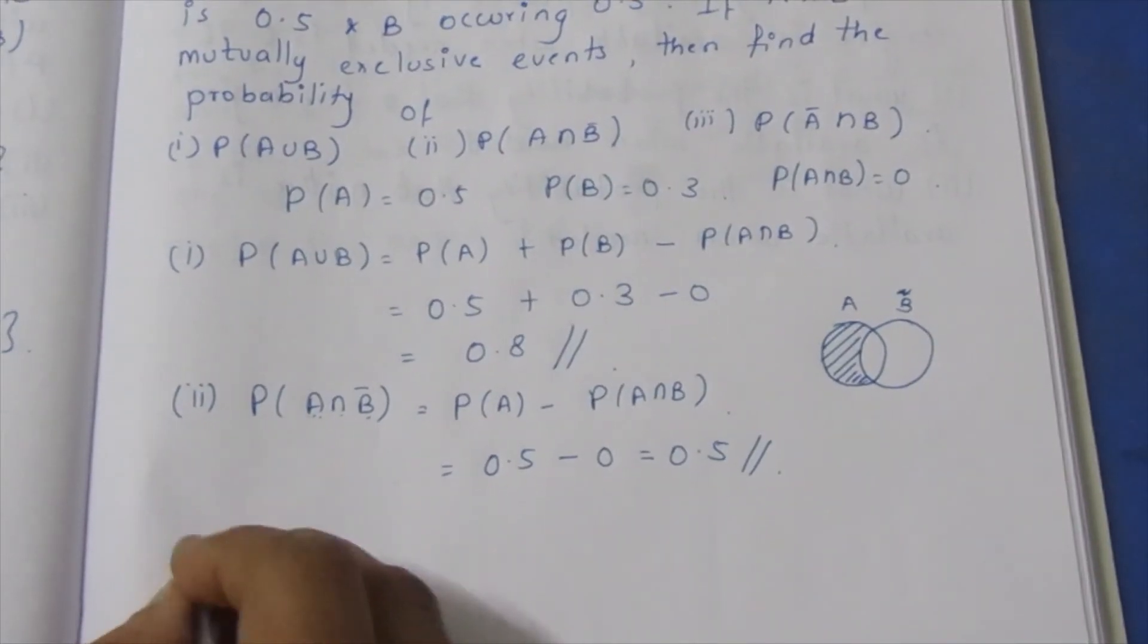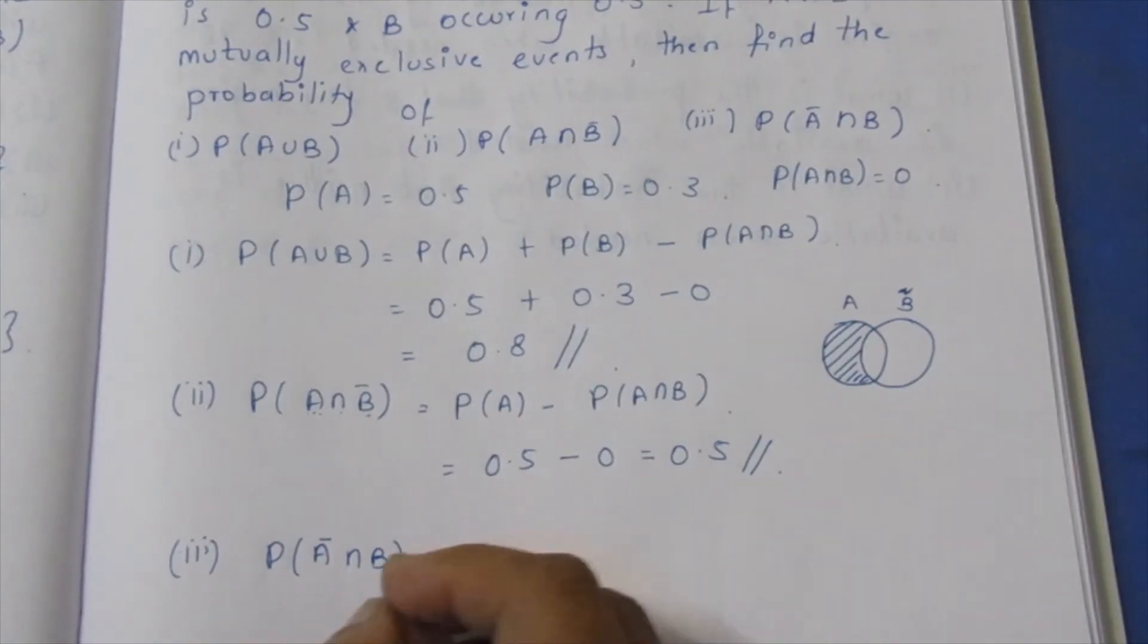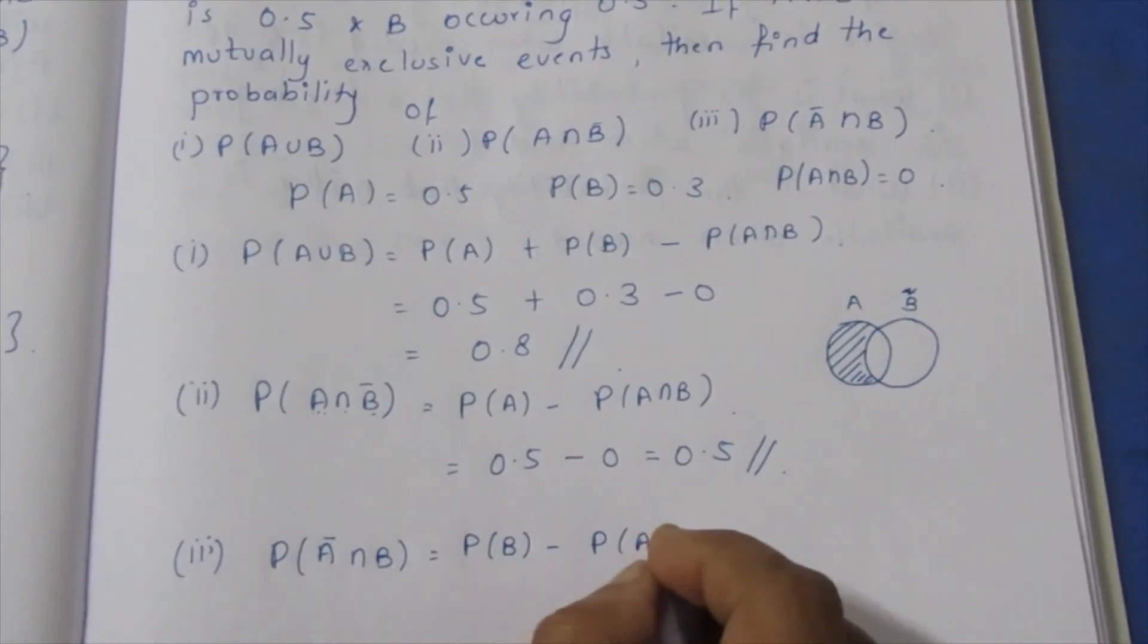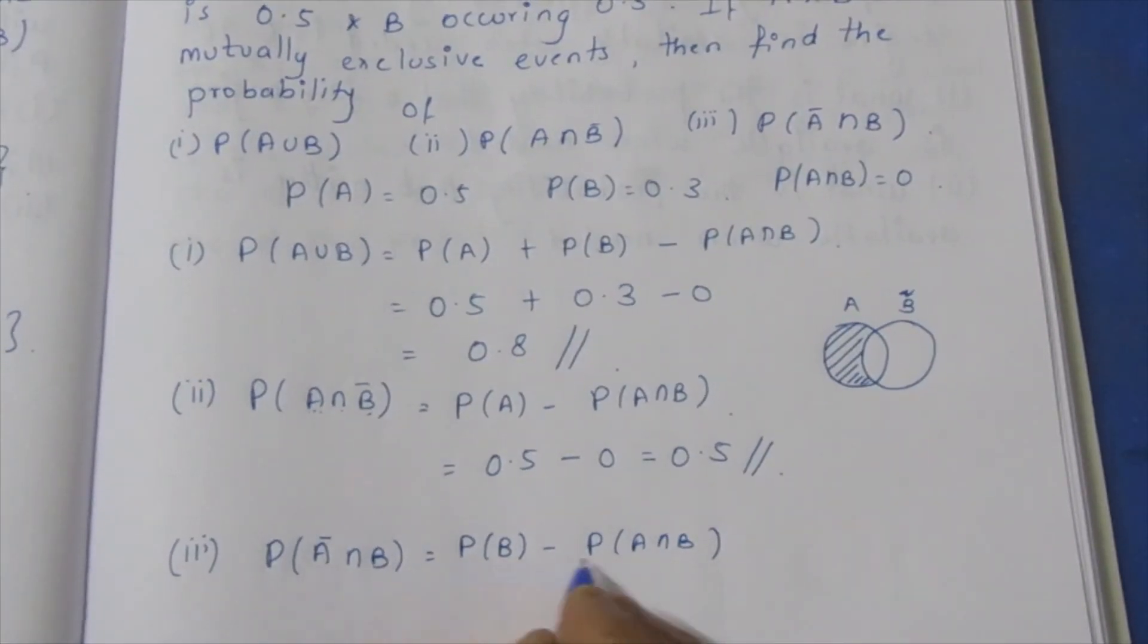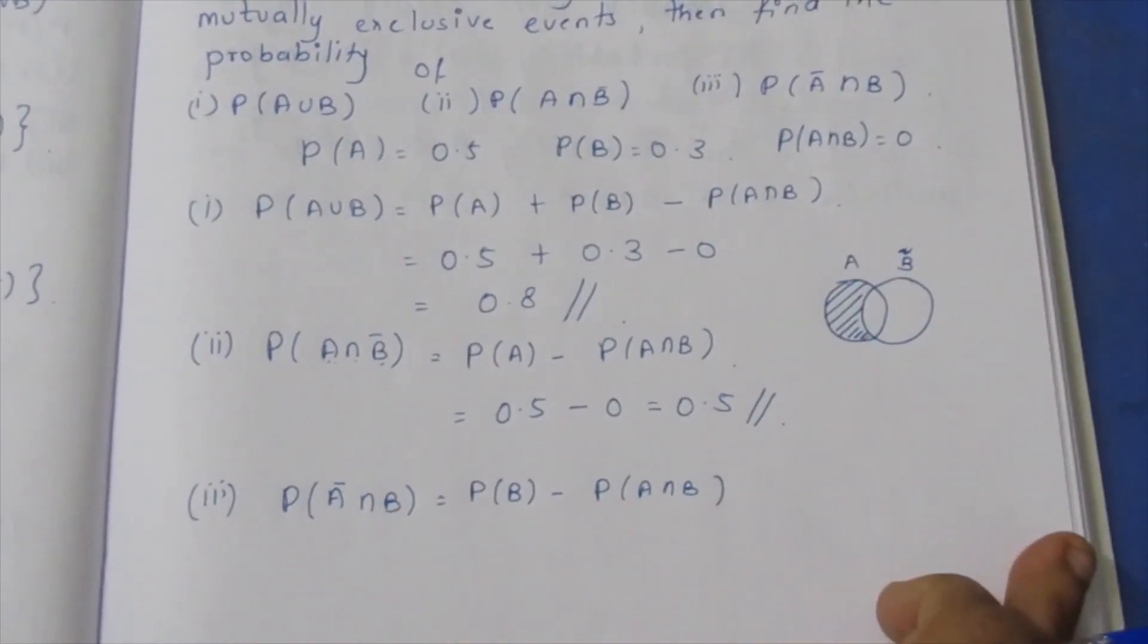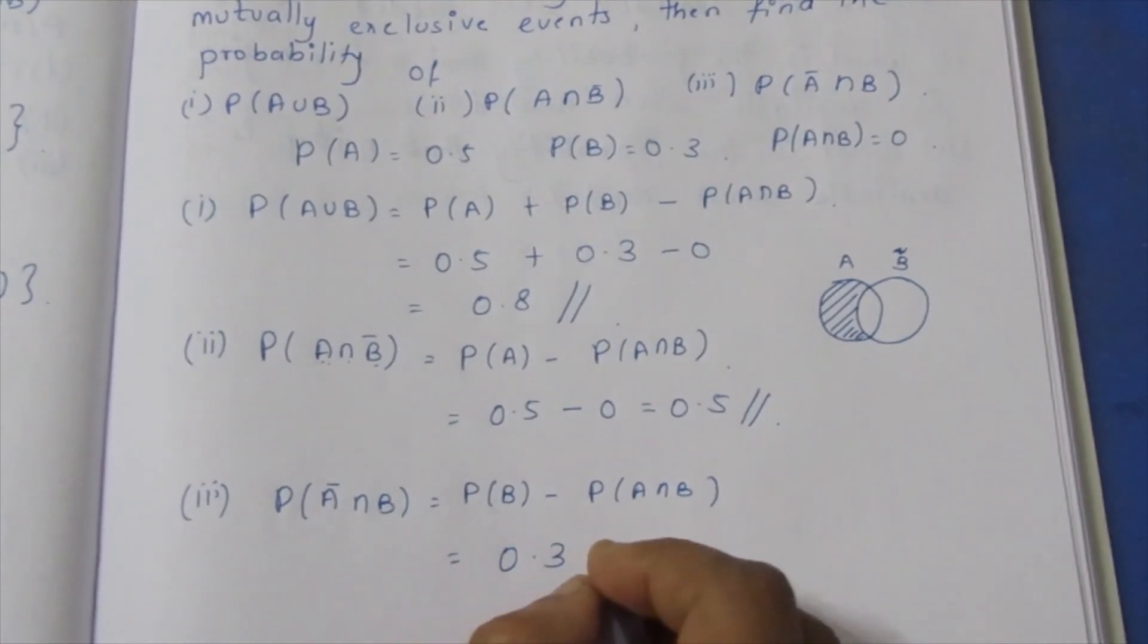A intersection B' equals P of A minus P of A intersection B, which equals 0.5 minus 0.